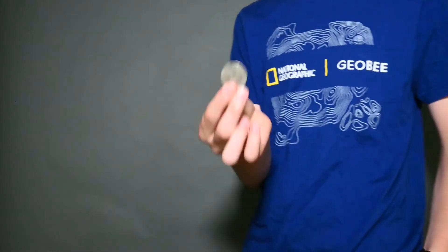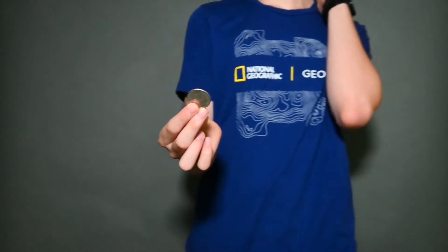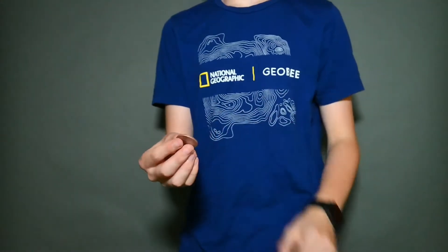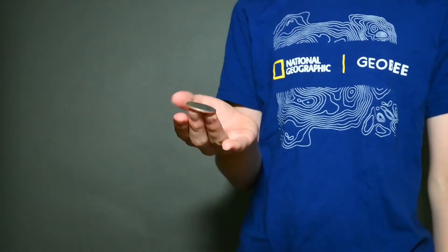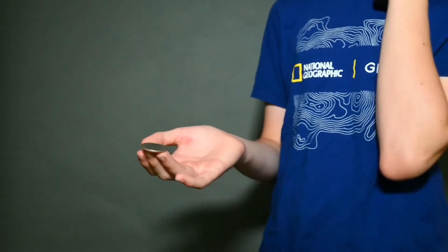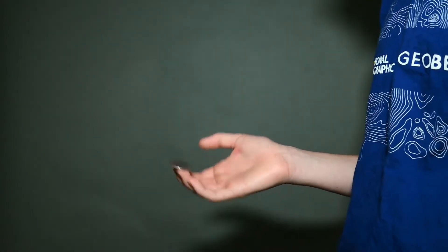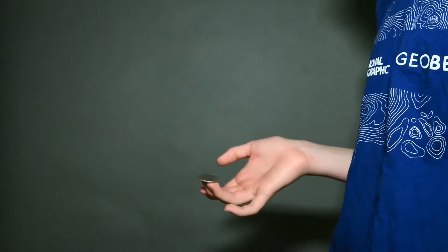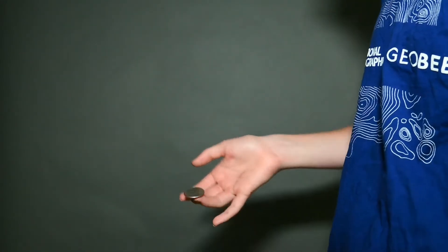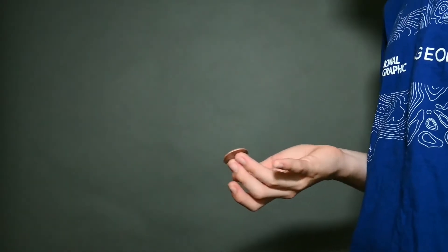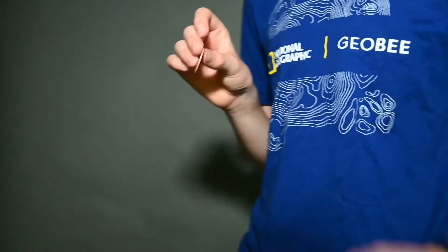So this is the in-depth tutorial of how you do the muscle pass. Let's just get into it. First of all, you're going to need to position the coin on the tip of your middle and ring finger, just like this, and you need it to balance so you can move it around at different angles without it falling off.